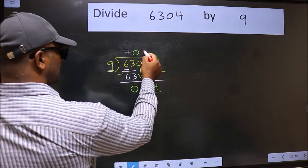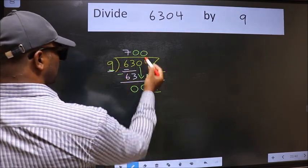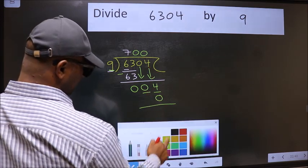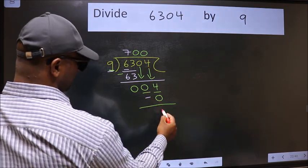So, what we should do is we should take 0. So, 9 into 0, 0. Now, we should subtract. We get 4.